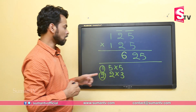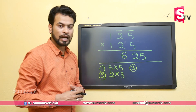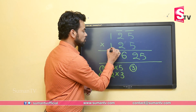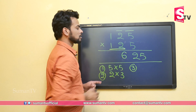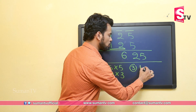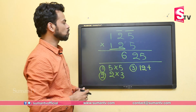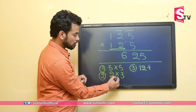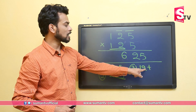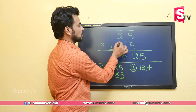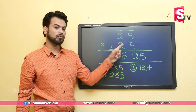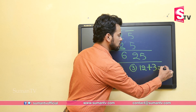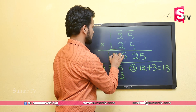Now a new third step comes. In the third step, we take the tens and hundreds digits together — that is 12 — and to this we add the successor of the tens digit. The tens digit is 2 and its successor is 3, so 12 plus 3 equals 15. So the answer is 15625.